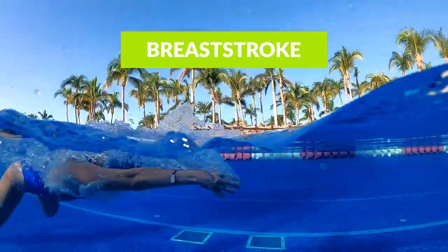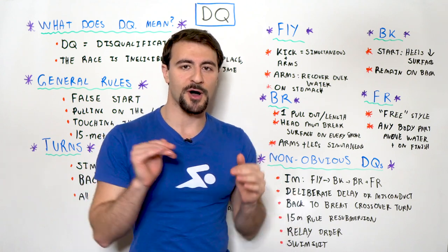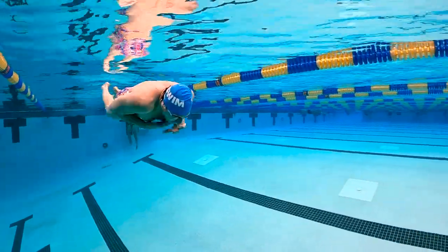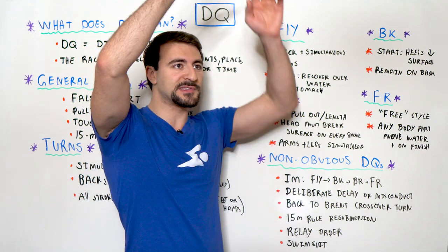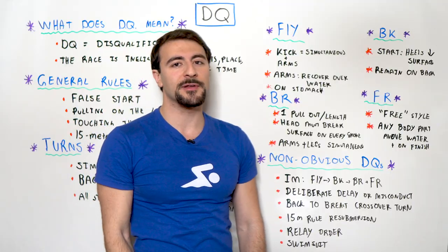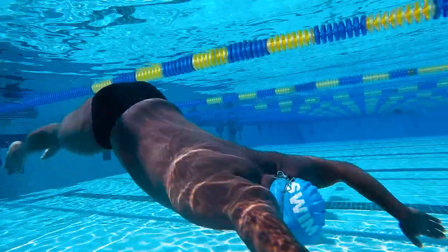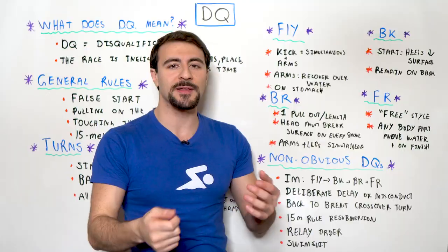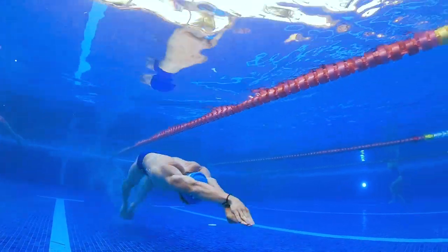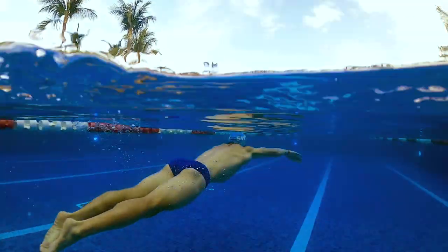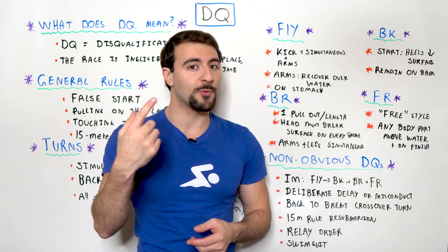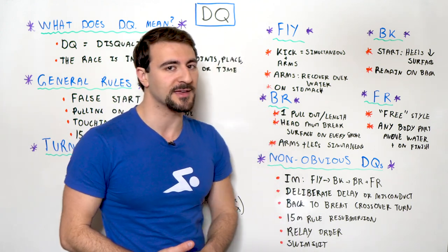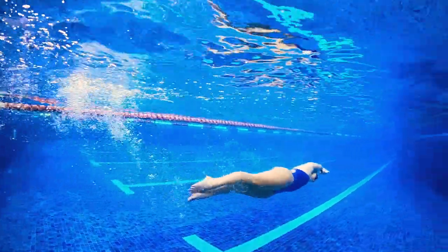Breaststroke is tricky because you get to do what's called a pullout off the wall. The pullout is an area where a lot of people get disqualified. The rules are: push off the wall in streamline, you're allowed one full arm pull down — all the way until your hands pass your waist — and then you're allowed one dolphin kick at any point in that process. Then one breaststroke kick underwater, bring your hands back in front, and begin the stroke immediately. Doing more than one dolphin kick is a common disqualification.